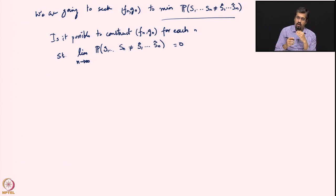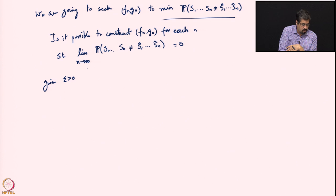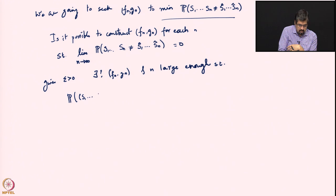Before taking the limit as n goes to infinity, one needs to formulate the problem for finite n. Given an epsilon greater than 0, does there exist f_n, g_n, and a large enough n such that the probability that s_1 to s_n is not equal to s_1-hat to s_n-hat is less than epsilon? That is what we want to achieve.